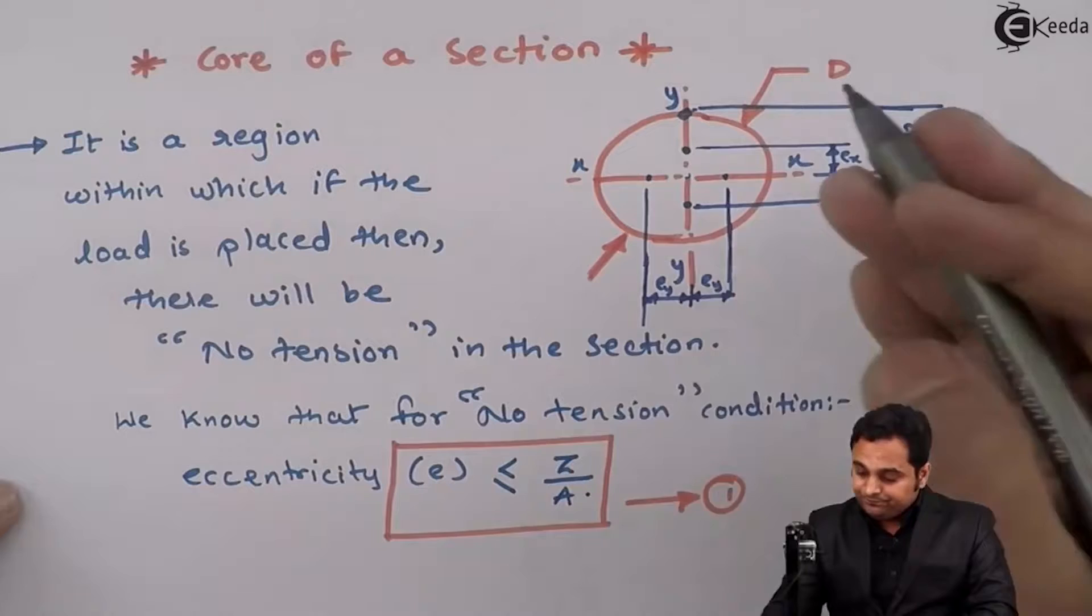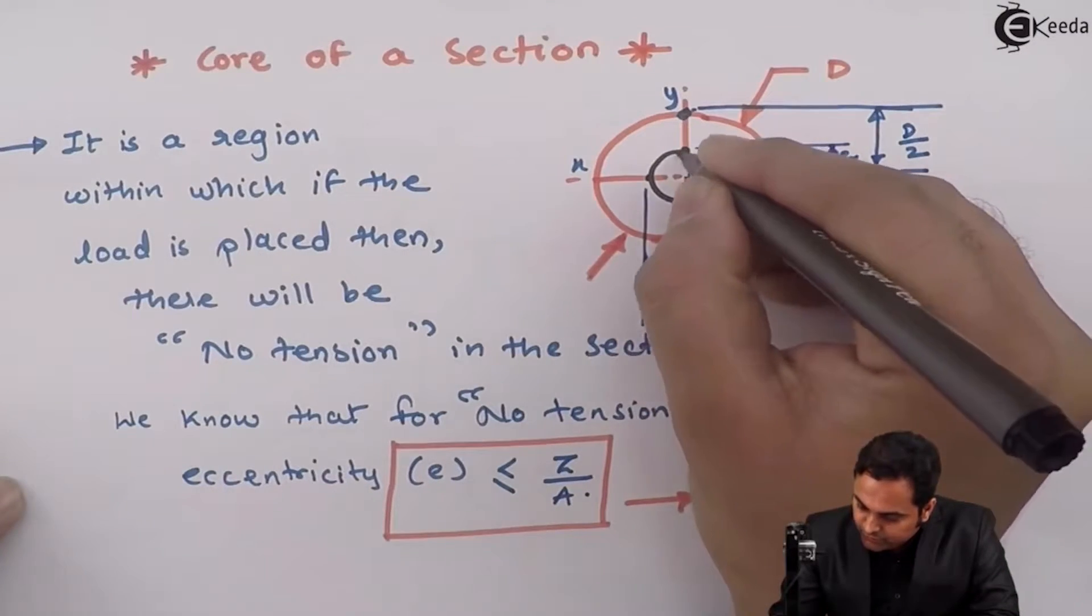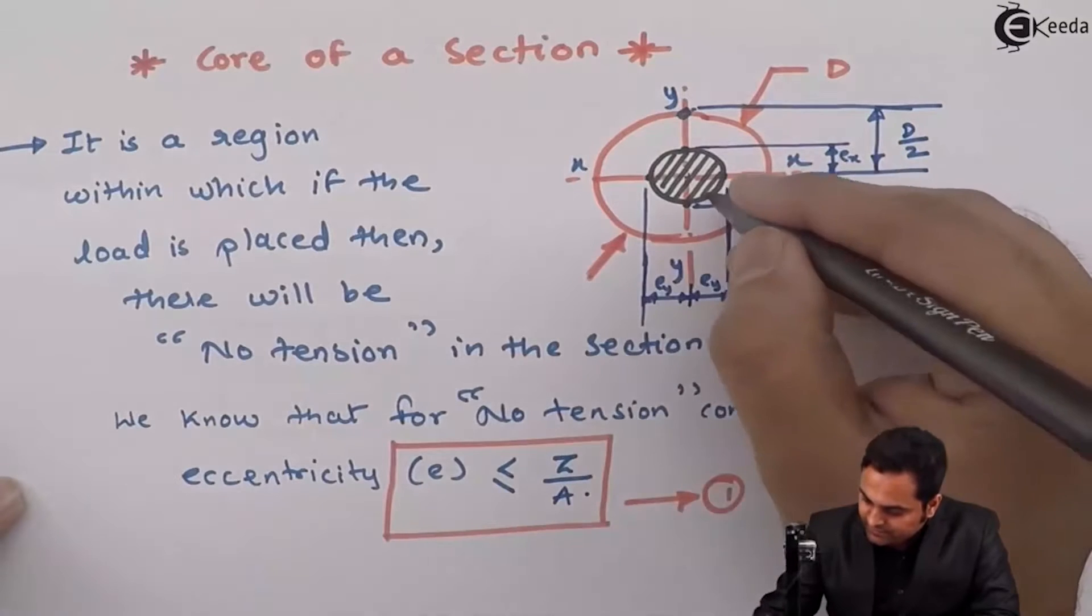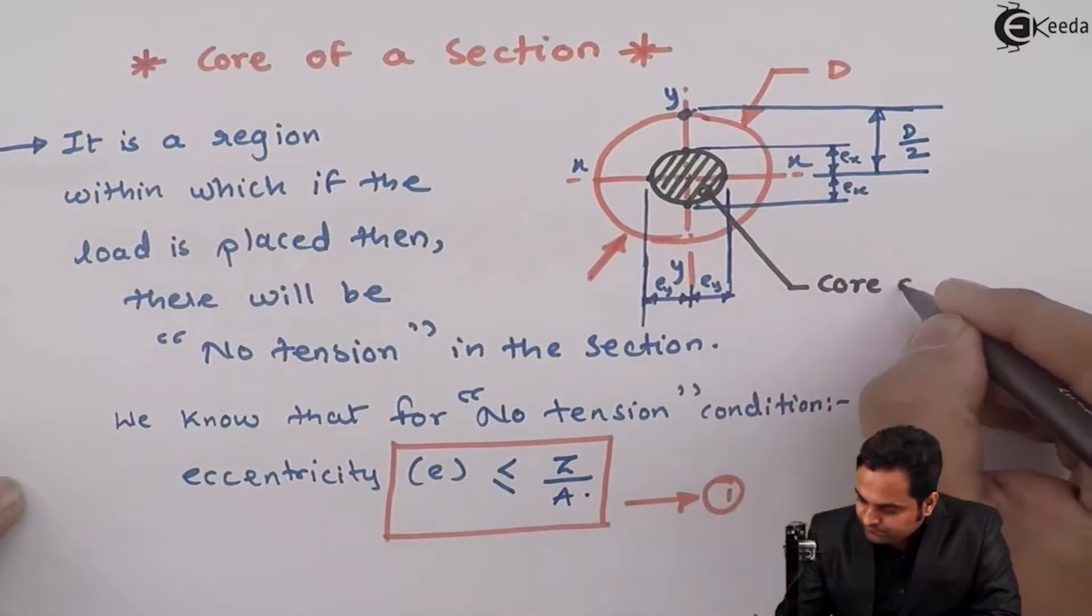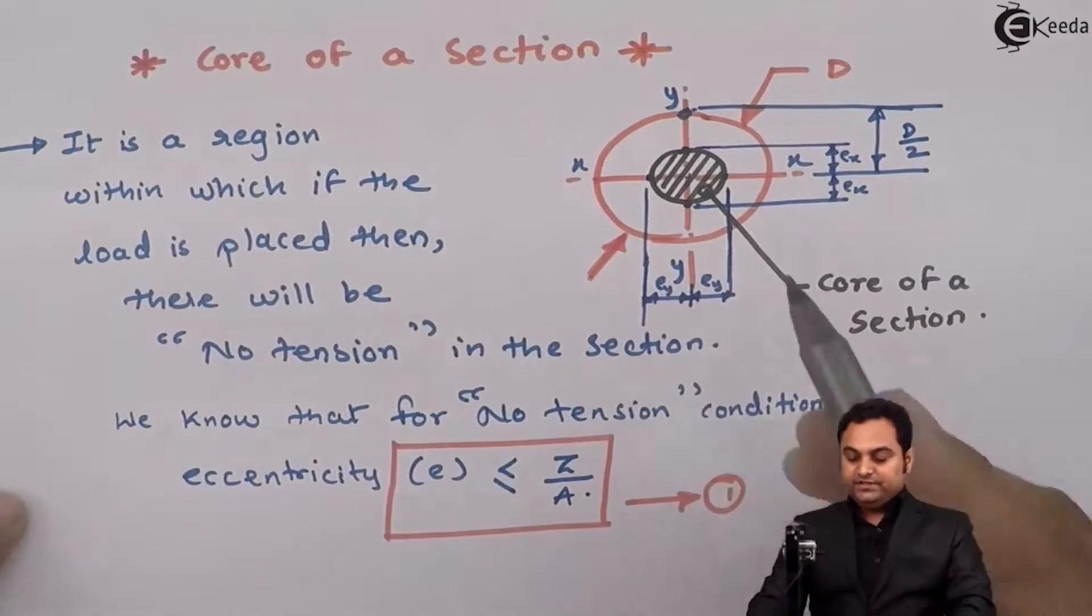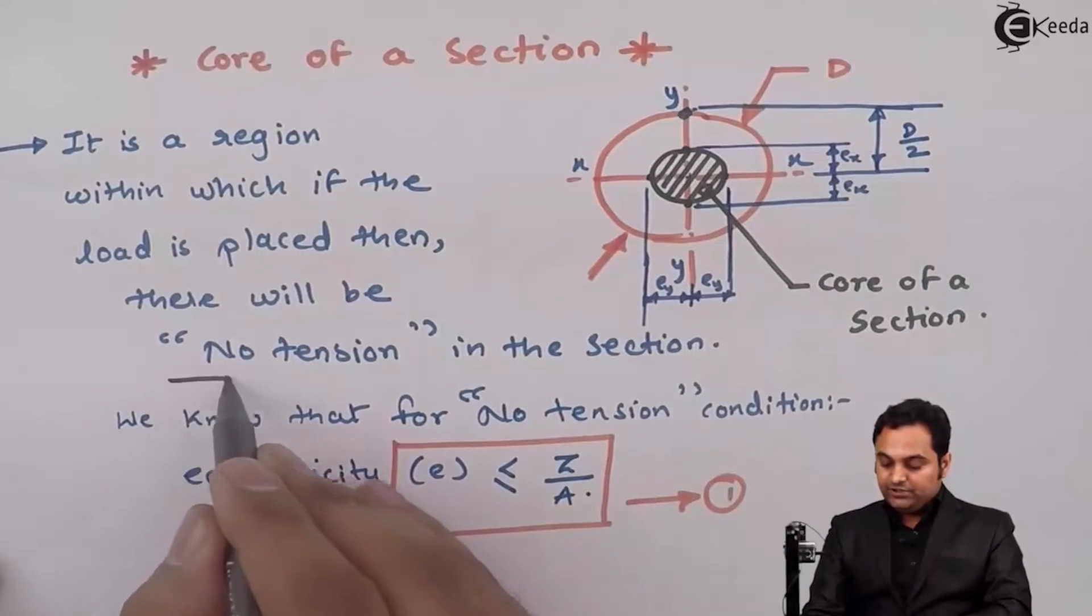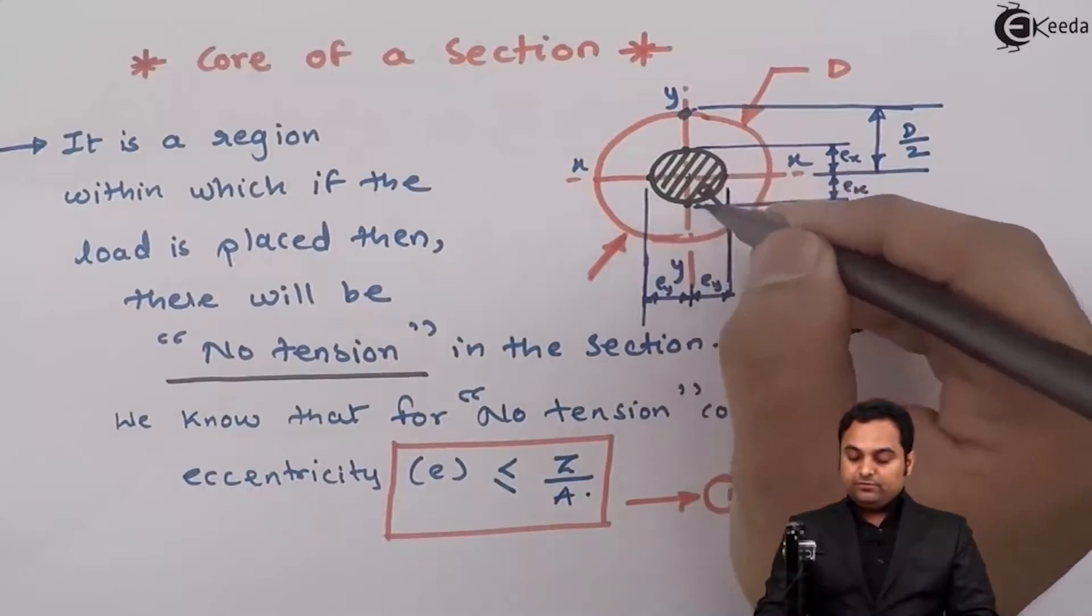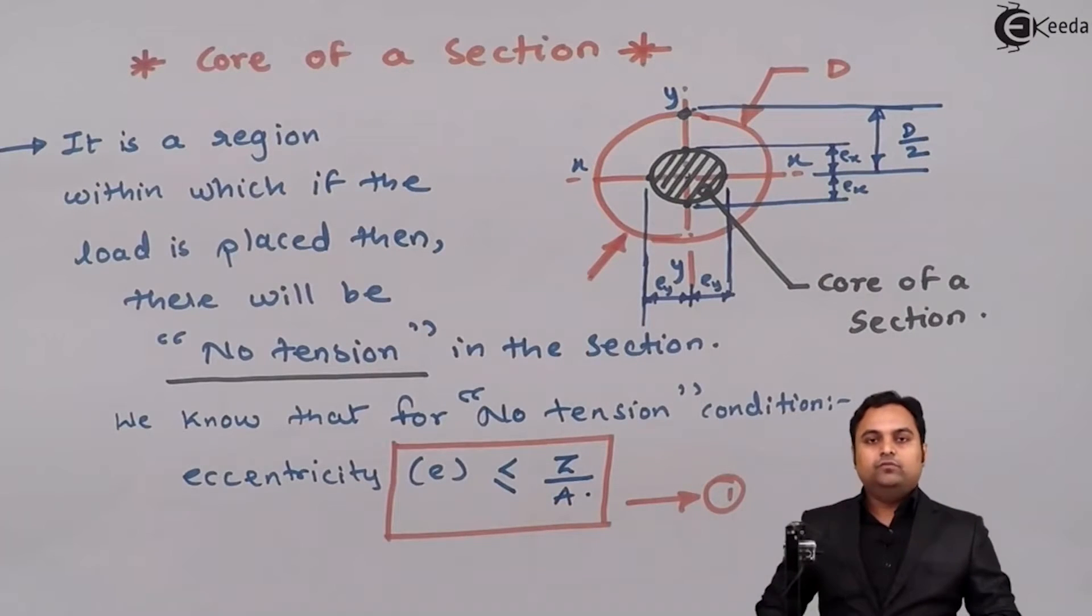If I join all the points with a circle, I am getting an area. This area is called the core of a section. Core of a section is that region within which if we are placing the load, there will be no tension in the section. If the load is placed anywhere away from this shaded region, there will definitely be tension and the column would fail.